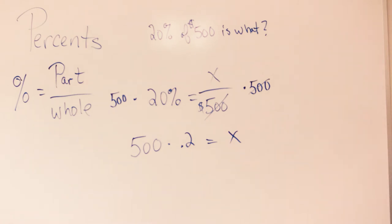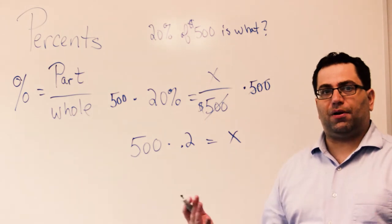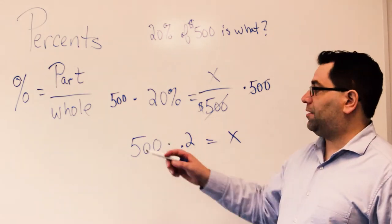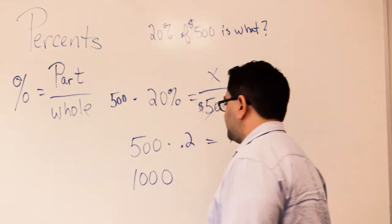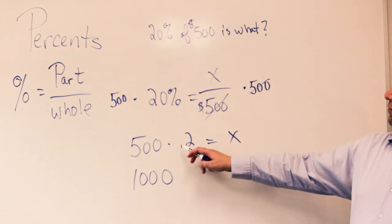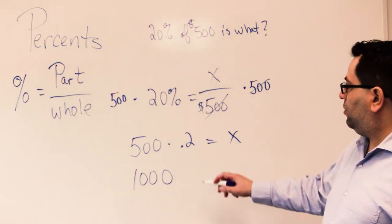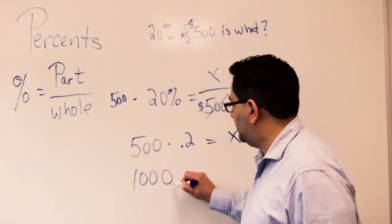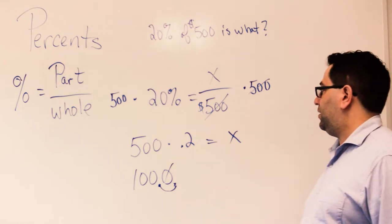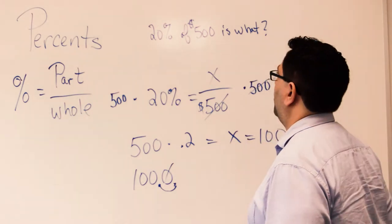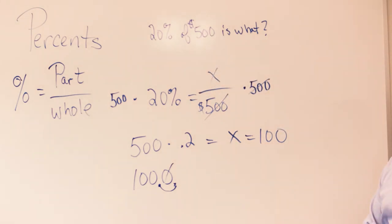Let's think back to our multiplication. Five hundred times point two — two times five hundred is a thousand. However, I have one decimal point, so using mental math strategies, one decimal point means this last zero goes away. I'm left with one hundred. So twenty percent of five hundred is one hundred.